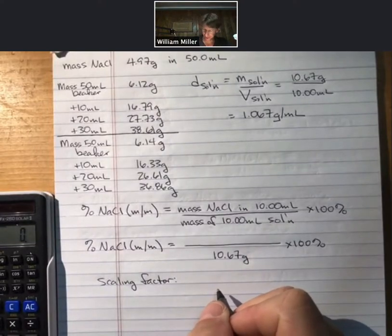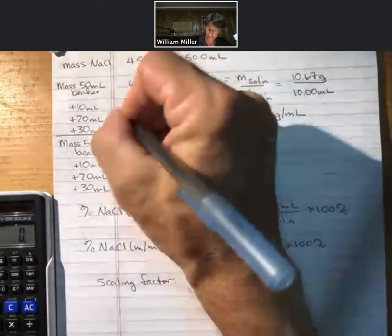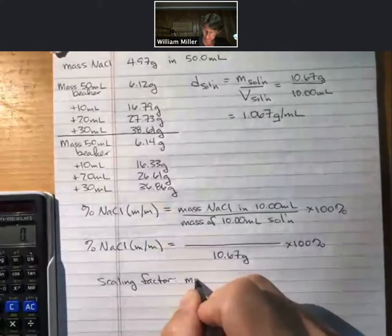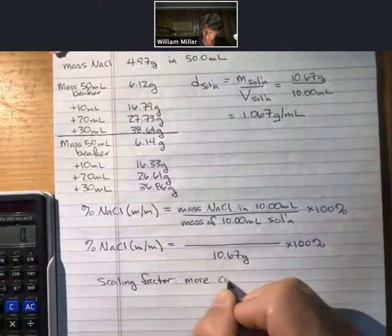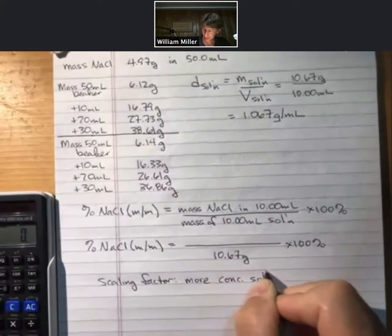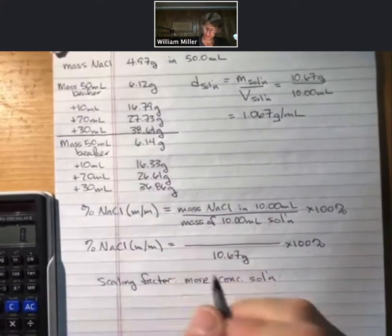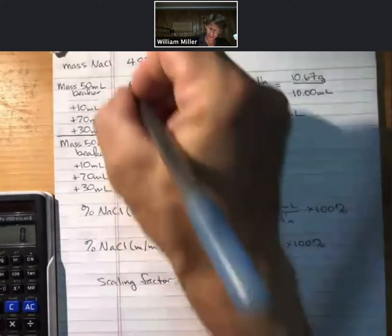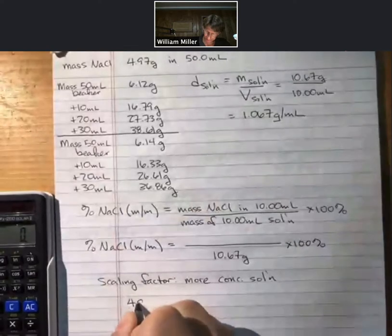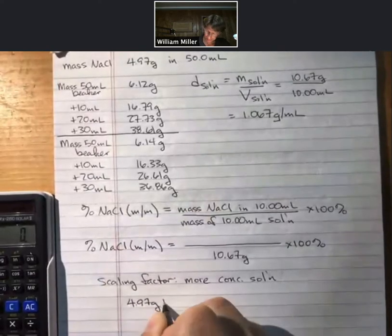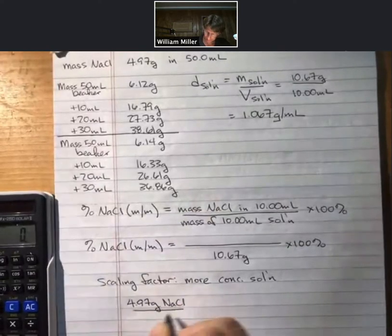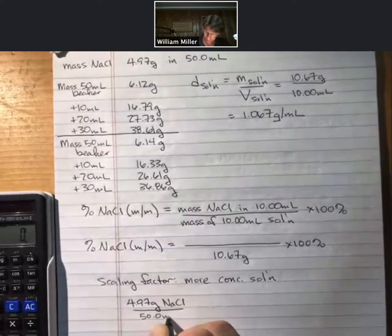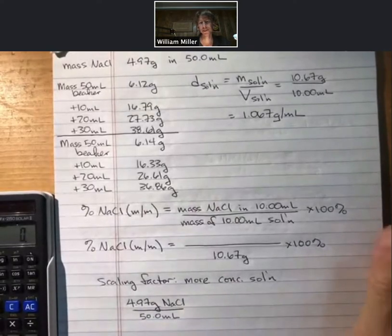One for the more concentrated solution, which is the top set of data. And I'll go over the one in a minute for the more dilute solution. For the more concentrated solution, we know that there were 4.97 grams in 50.0 milliliters.